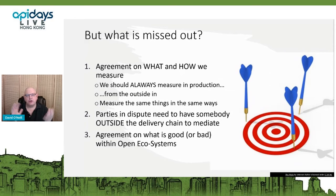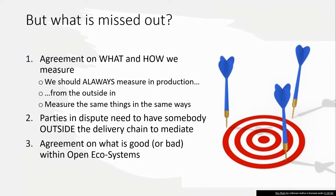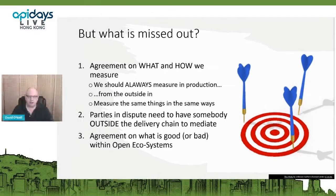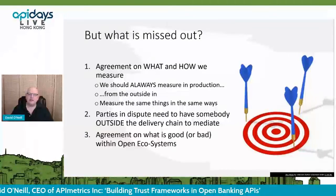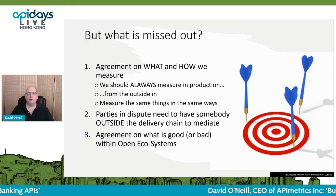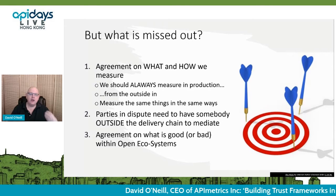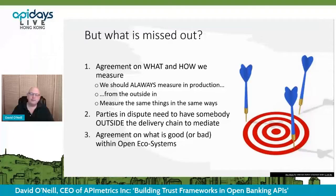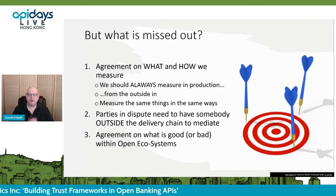But what's missed out? The first thing is agreement on what and how we measure. We should always measure in production — real production accounts in the production environment. We should always measure from the outside in, as if you were a third party. And we should agree in advance to measure the same things in the same way. If you're using latency, are you using the median, the P95, or the P99 value? Following on from that, parties in dispute need somebody outside the delivery chain to mediate — you can't have infrastructure vendors or partners involved in commercial delivery working on those things. And we need agreement on what 'good' and 'bad' mean within open ecosystems that everybody can sign up for.